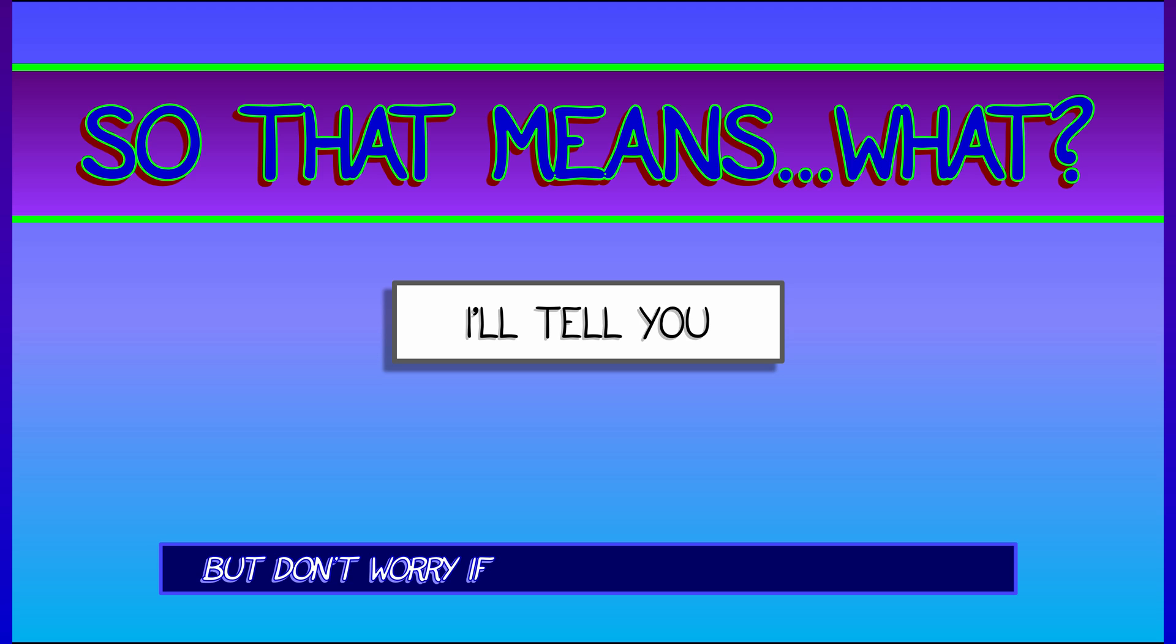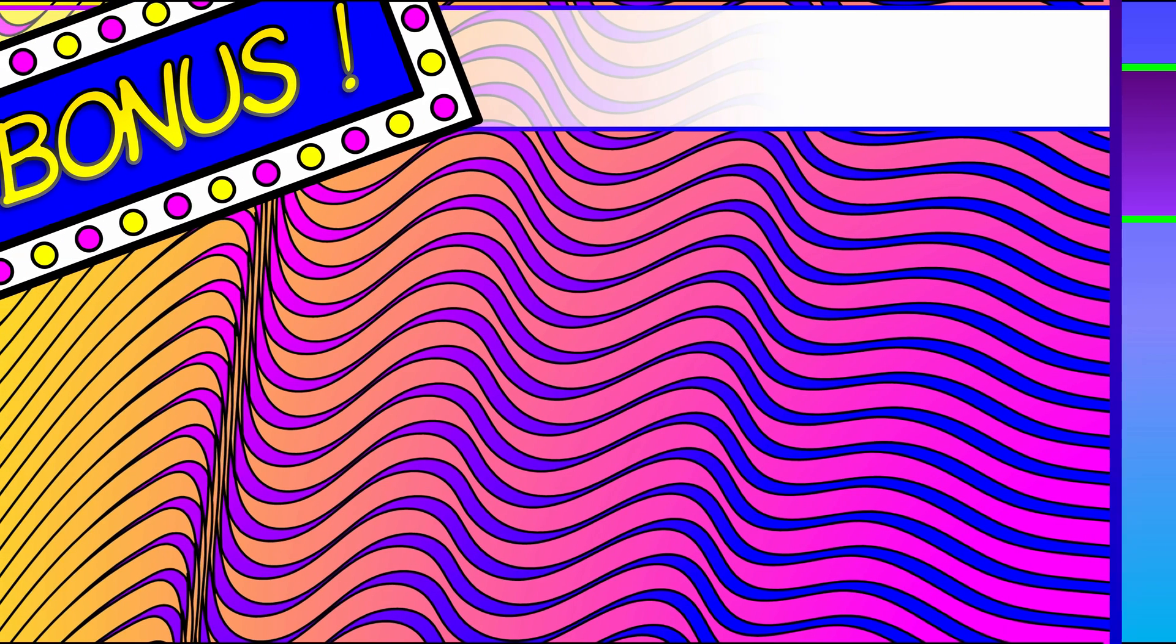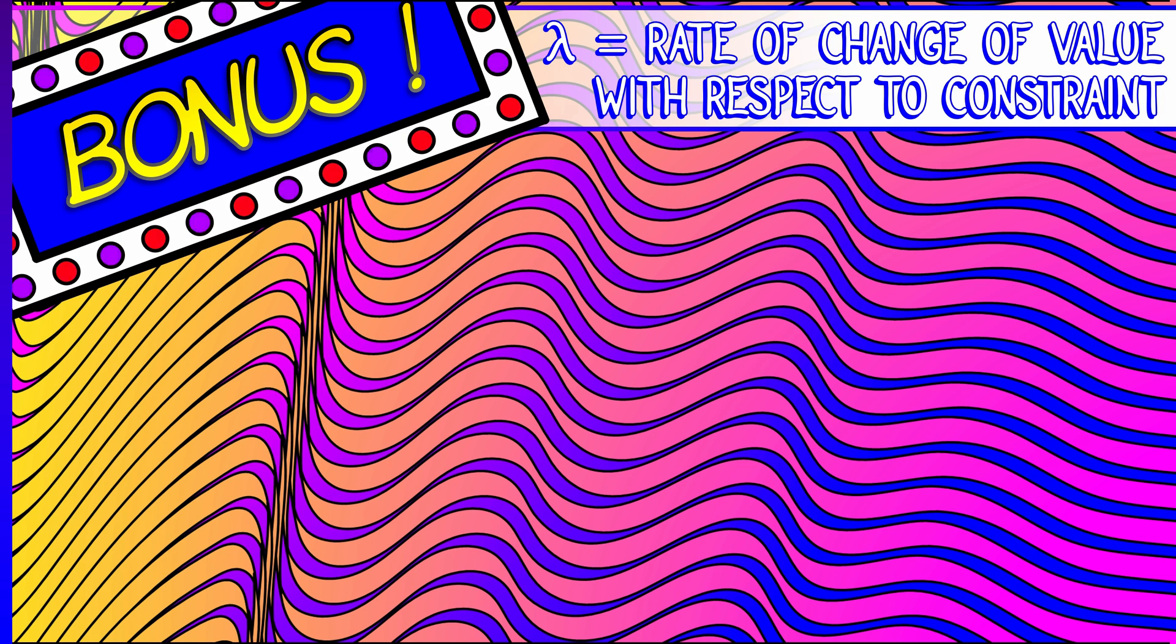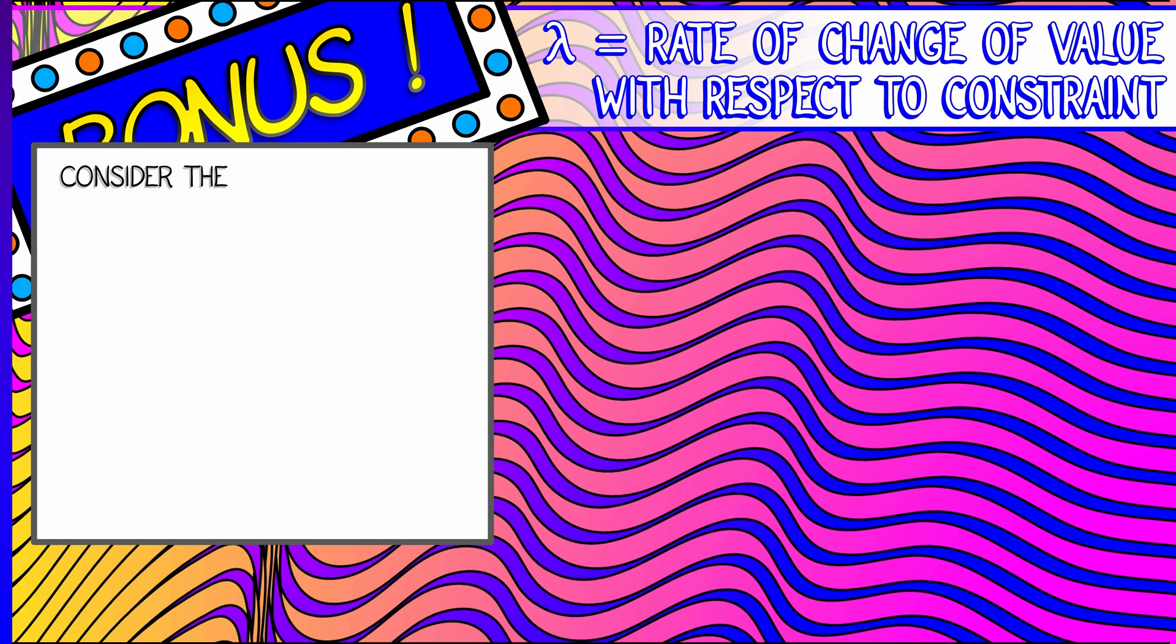Well, let me tell you. But it might take viewing this maybe two or three times before it really sinks in. Here we go. It's bonus time. Here's the claim. Lambda is the rate of change of the optimal value with respect to the constraint value. What does that mean? How do we make sense of that?